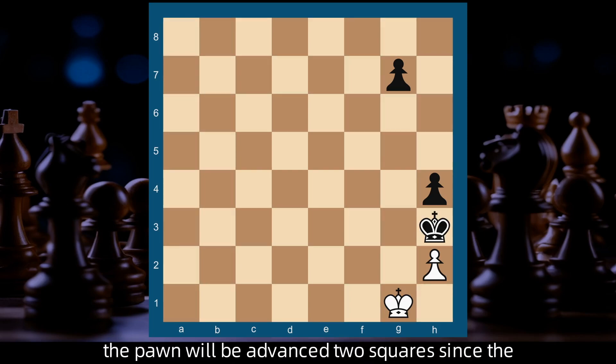The pawn will be advanced two squares since the White king will be in the corner. But if it were now Black's move, the g pawn should only be advanced one square since the White king is at g1.